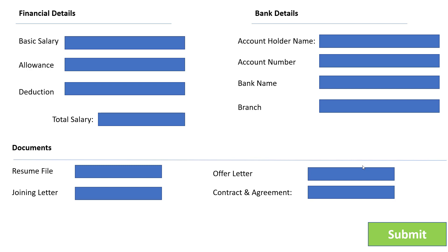The financial detail includes basic salary, allowance, deduction, and net total salary — all related to your employee, so you have to add employee ID. We also have bank details: account holder name, account name, bank name, and branch. For documents: resume file, joining letter, offer letter, contract, and agreement. These are IFormFile but you can take type string because you need to store file path information. After all details are filled, click the submit button.